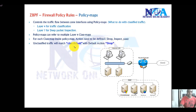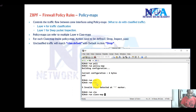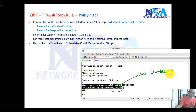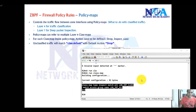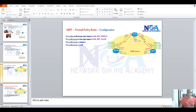Any traffic not matching your defined class map is automatically placed into the default class. If you do 'show run class map', you can see that the default class matches any other traffic not classified. The default action for the default class is drop. When configuring the policy map, you'll see the default class with a drop action applied to it.